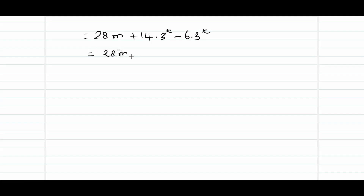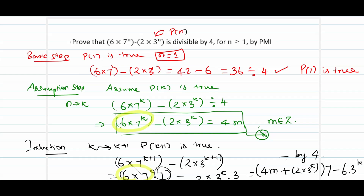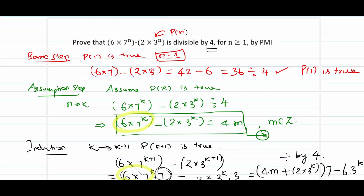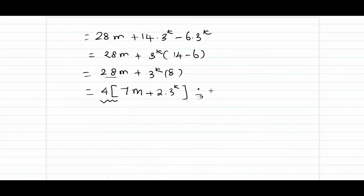Taking 3 power k common outside, we get 28m plus 3 power k times of 14 minus 6, which is 8. So the expression is 28m plus 8 times 3 power k. The quantity needs to be shown divisible by 4. Taking 4 common from both terms leaves 7m plus 2 into 3 power k. Since this is a product of 4, the statement is obviously divisible by 4.